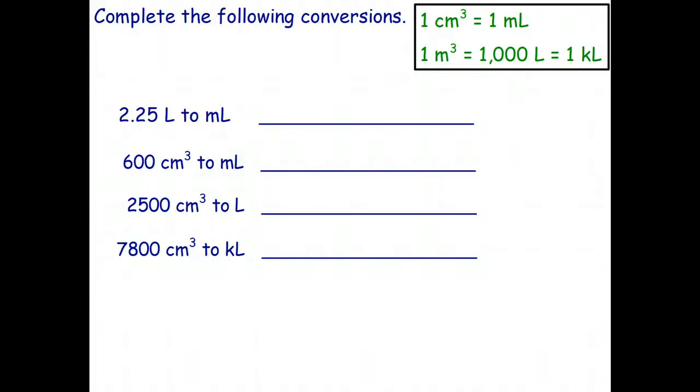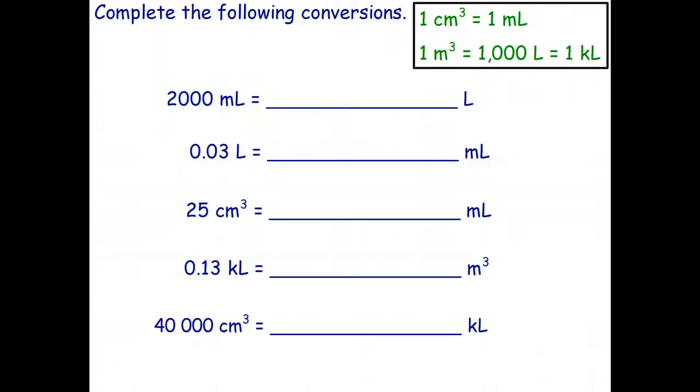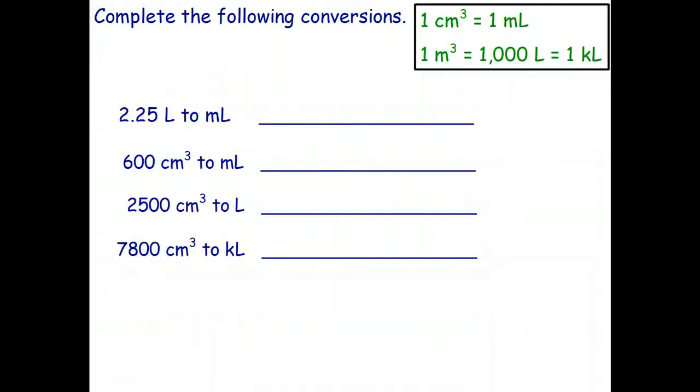Let's go ahead and do these conversions. 2.25 liters to milliliters - we're converting capacity to capacity, going from big units to small units, so I multiply. Move the decimal point three places to the right, because there's 1,000 milliliters in a liter. That gives me 2,250 milliliters. Converting cubic centimeters to milliliters - it's just one to one, so that requires no calculation, just change the units.